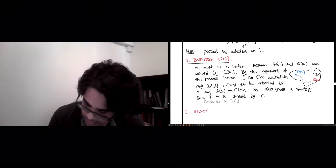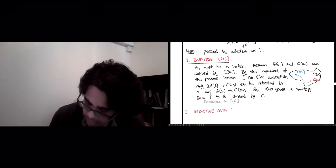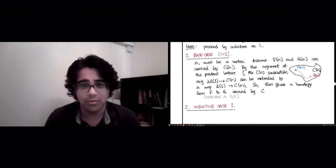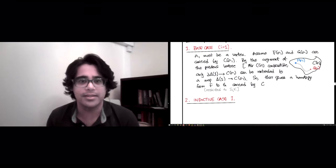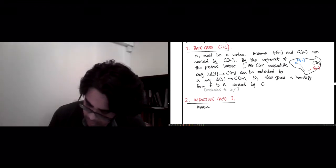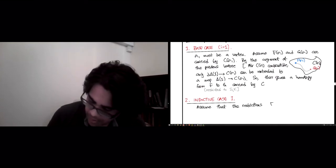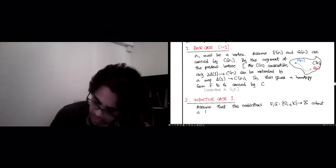So the base case was just reiterating an old argument that we've already made in the previous lecture. So inductive case part 1. Well, how do you induct? You assume that things hold for i minus 1, and then you try to show that this implies that they must also hold for i itself. So assume that the restrictions f, g from S_{i-1}(K) to X admit a homotopy theta, which must go from S_{i-1}(K) cross [0,1] to X, that is carried by C.